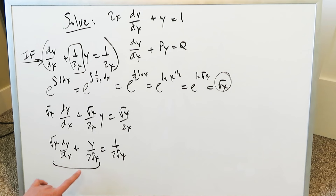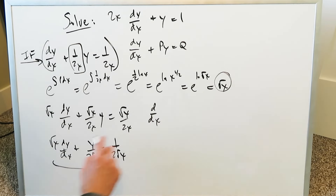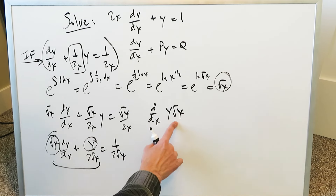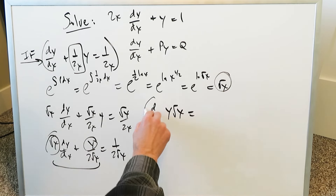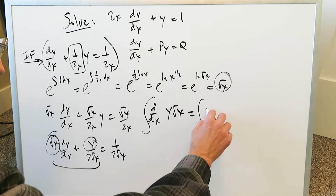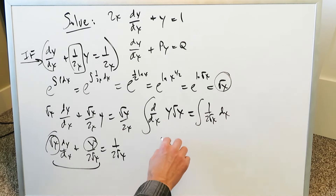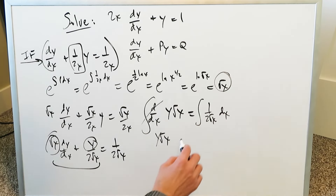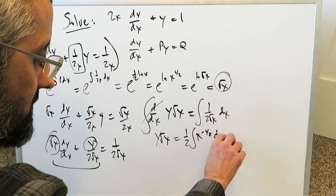This left side comes from the derivative of the expression y times root x — if you do the product rule you'll get exactly this. Looking at the integral with the integral of 1 over 2 root x dx, you have y root x — because these cancel out — is equal to 1 over 2 times the integral of x to the minus 1 over 2 dx.